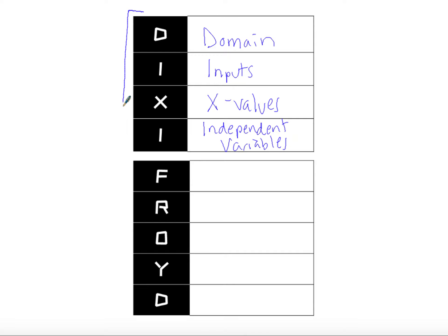So if you can remember the word Dixie, domain, inputs, X values, and independent, all of those go together.